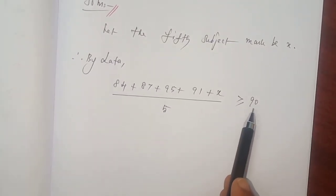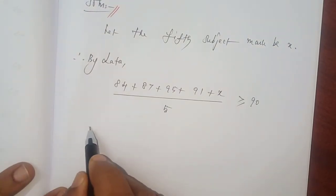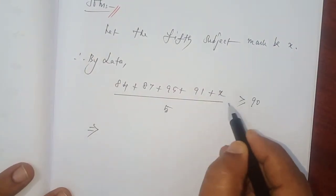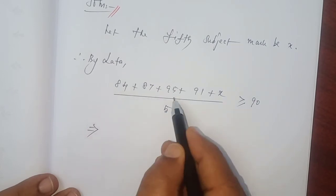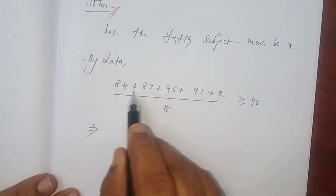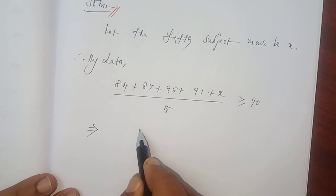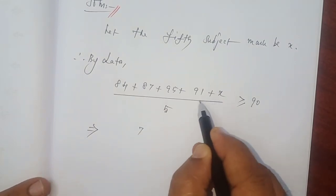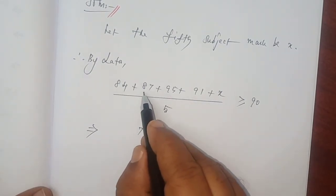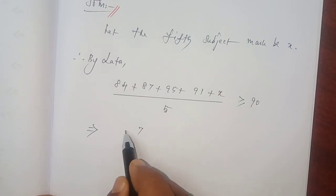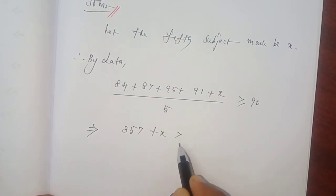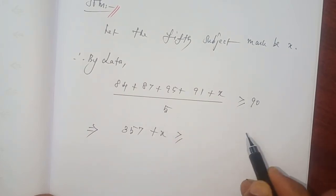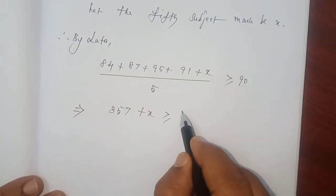90 and above only, we will be getting that A grade. We have to find out the 5th subject minimum mark. 84, 87, 95 and 91. Add everything: 1 plus 5, 6 plus 7, 13, 13 plus 4 is 17. Carry 1, 1 plus 9, 10, 10 plus 9, 19 plus 8, 27 plus 8, 35 plus X which is greater than or equal to, if we cross multiply, 5 into 90 that is equal to 450.